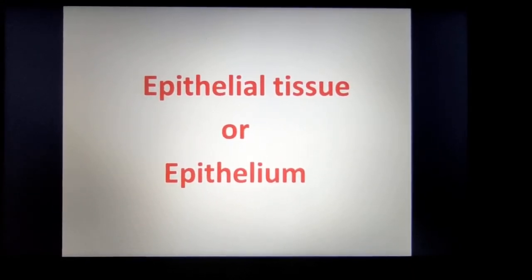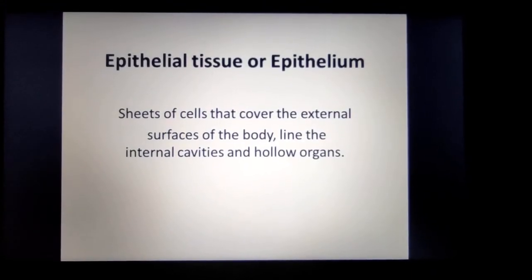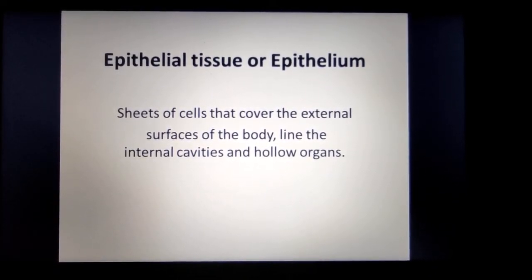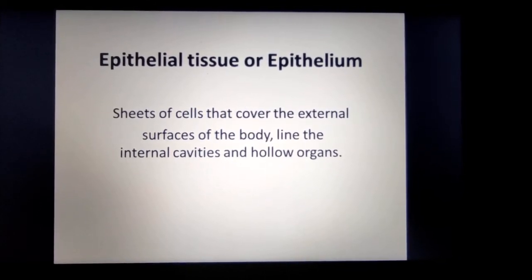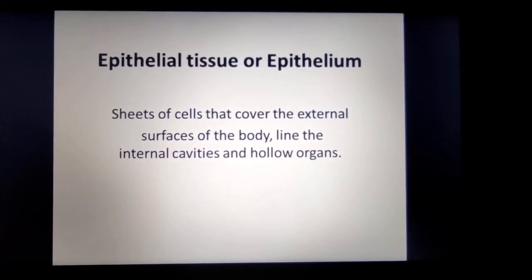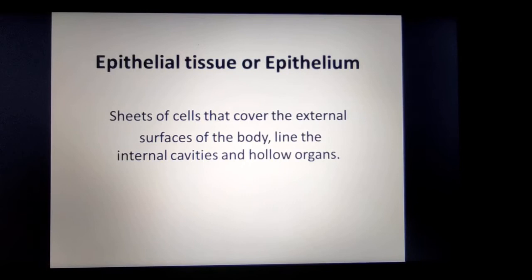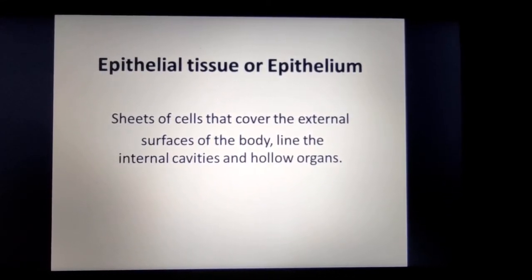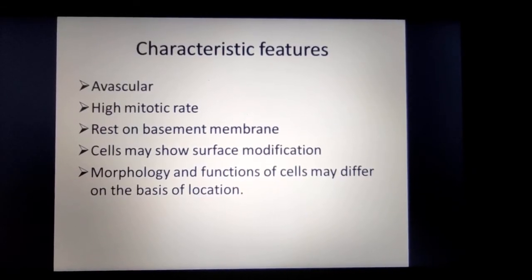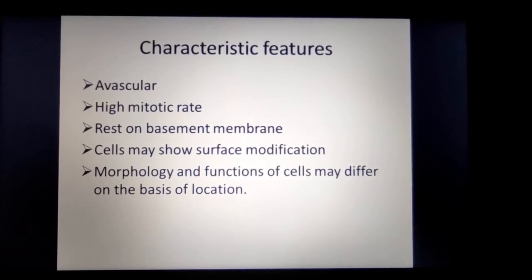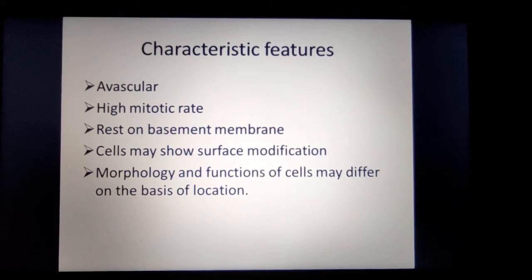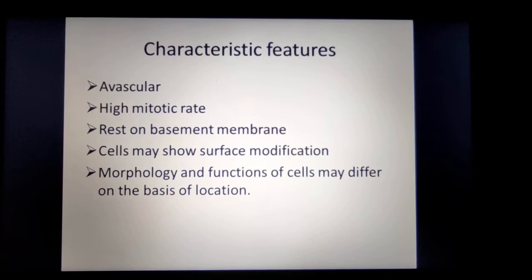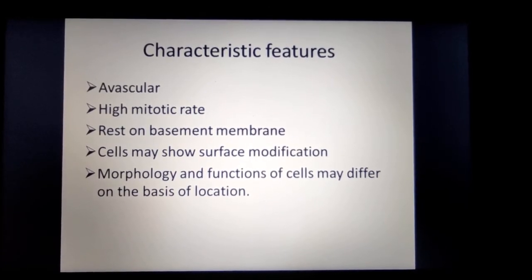Epithelial tissue is defined as the sheet of cells that covers the external surface of the body and lines the internal cavities and hollow organs. Its features include: it is avascular — there is no blood supply — it has a high mitotic rate, and it rests on a basement membrane.